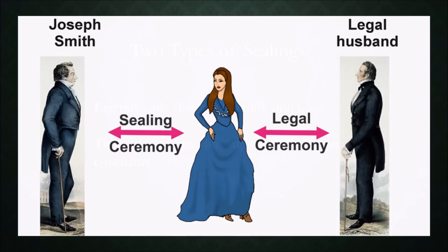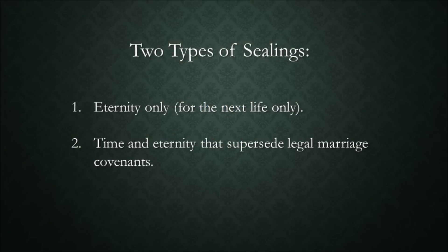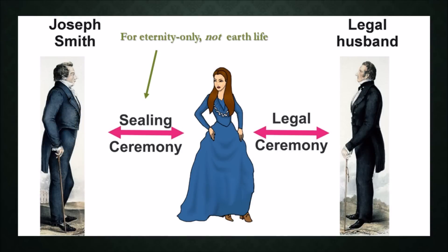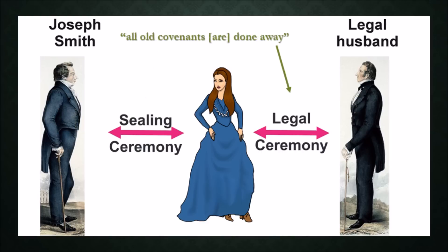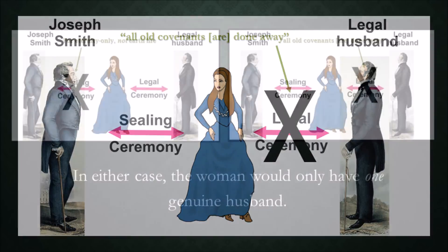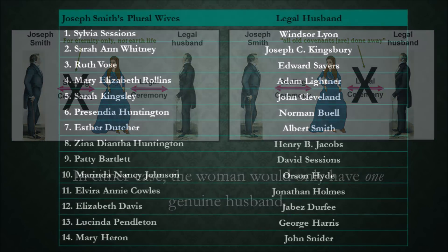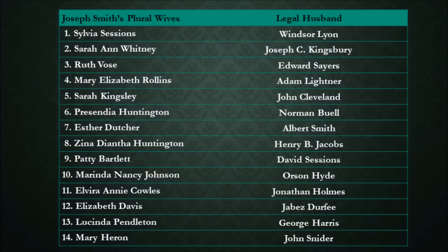Some viewers may not be aware that two types of sealings were performed between Joseph Smith and these women: eternity only, applying after death, and time and eternity, that supersede the legal marriage covenants. In other words, a woman sealed to Joseph Smith in an eternity-only ceremony would not be his wife on earth. And a time and eternity sealing ceremony would cause the legal ceremony to be done away, because D&C 22 verse 1 explains all old covenants are done away in this, the new and everlasting covenant. In either case, the woman would have only one husband after the ceremonies. It appears that all of Joseph Smith's 14 sealings to legally married women fall into one of these two categories.